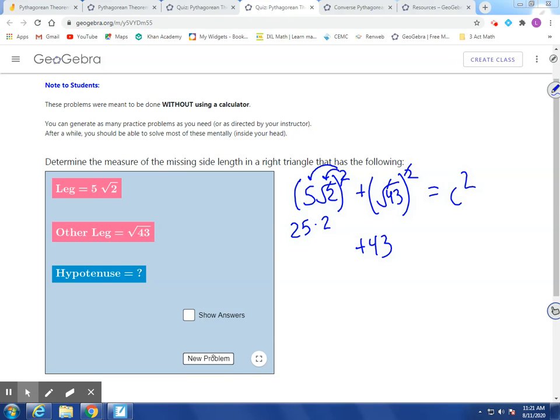Hopefully you can kind of see how that's working, and later in the year, when we talk about rules of exponents, we look at polynomials and quadratics, this will make much more sense. But right now, that's the easy way to kind of go about it. So this gives us 50. And so add these together, that's going to equal c squared, so we're looking at 93 is equal to c squared. Take the square root of both sides, and c equals the square root of 93.